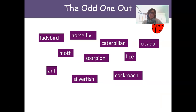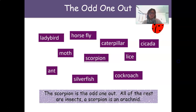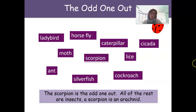Which is the odd one out here? The scorpion — all the rest are insects, whereas a scorpion is an arachnid. You will learn about this in a lot more detail as we follow through with the curriculum.